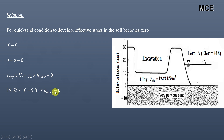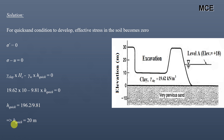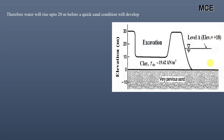Solving for the head of water that will cause quicksand: it equals 196.2 divided by 9.81, which equals 20 meters. So for the quicksand condition to develop in this clay deposit, the head of water should be equal to 20 meters. The present head is only 18 meters, meaning this clay deposit is safe against the quicksand condition.